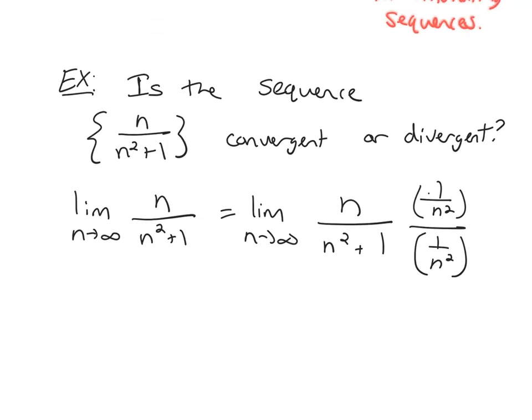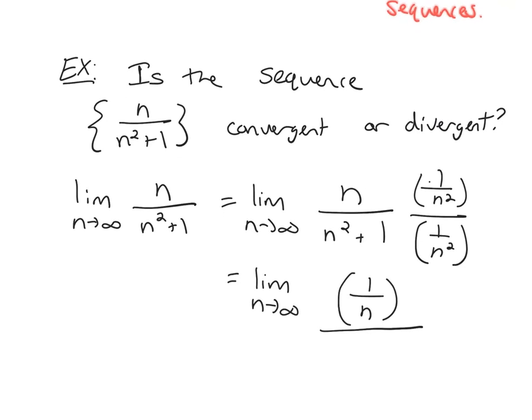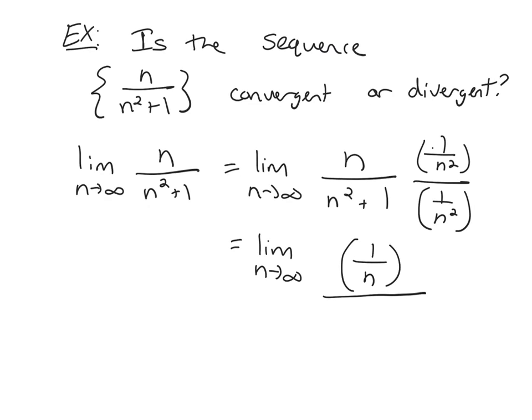And now if we simplify, in the numerator you're going to get 1 over n, and then in the denominator you're going to have to distribute. So distribute it out. You'll get 1 plus 1 over n squared.